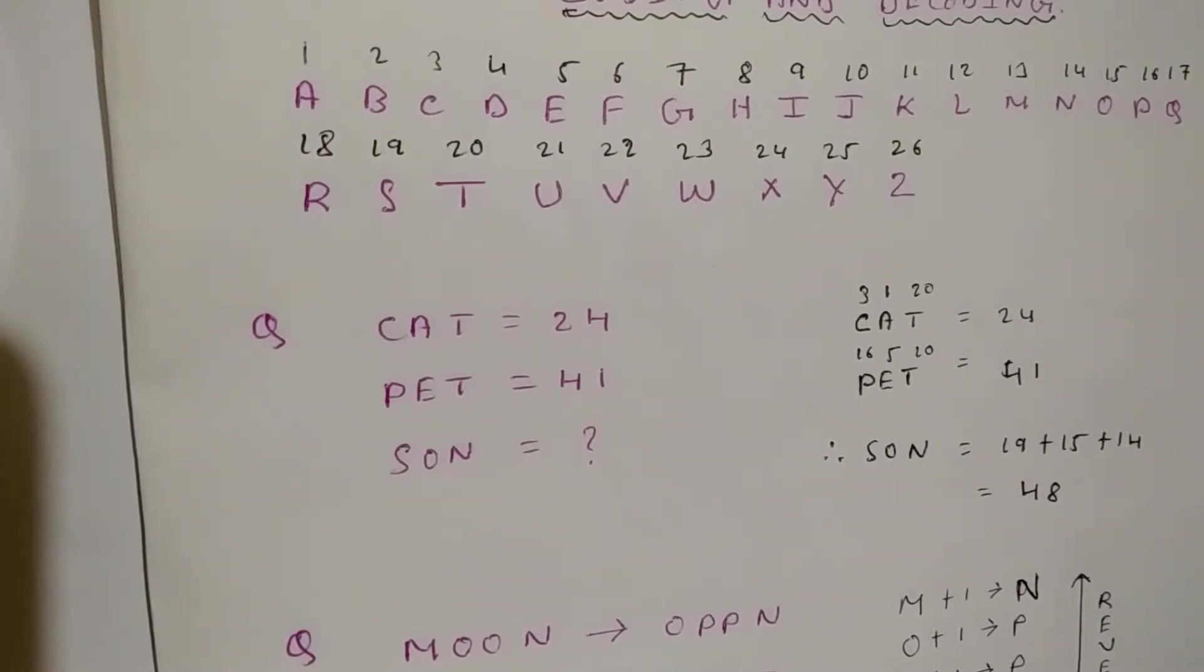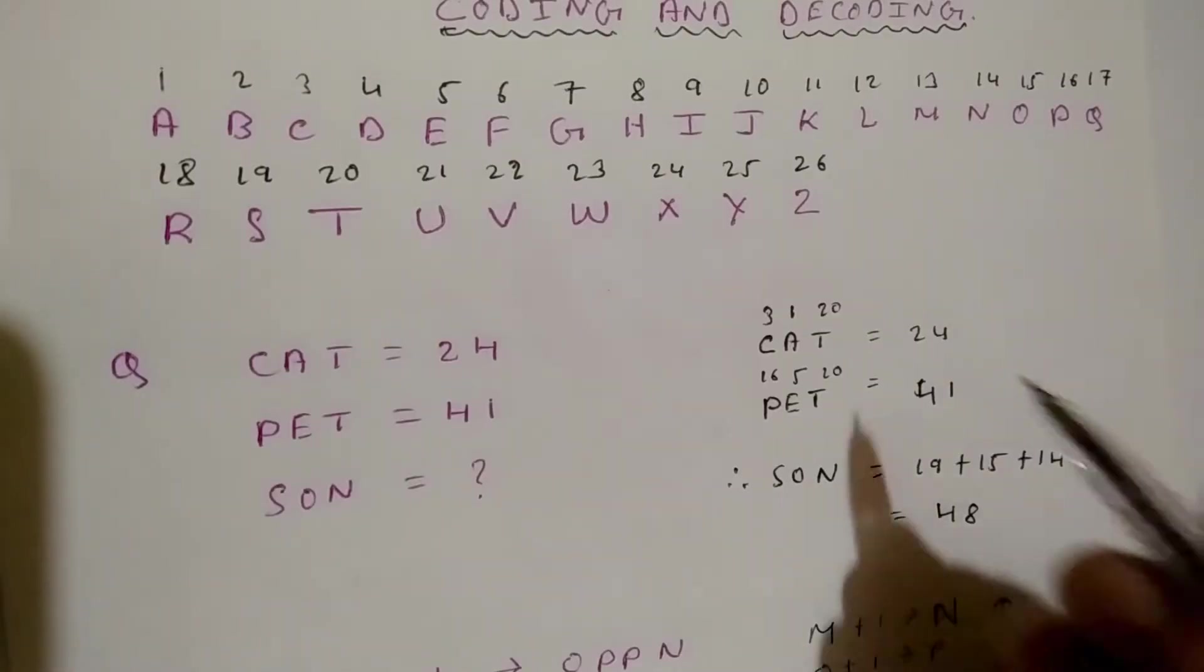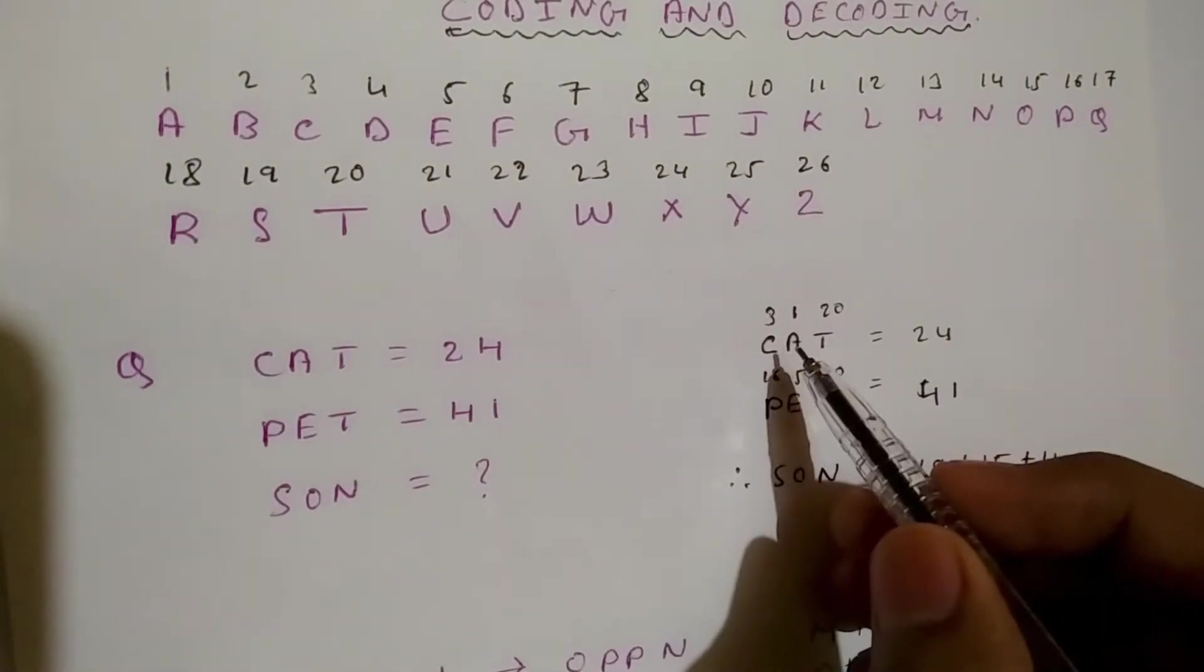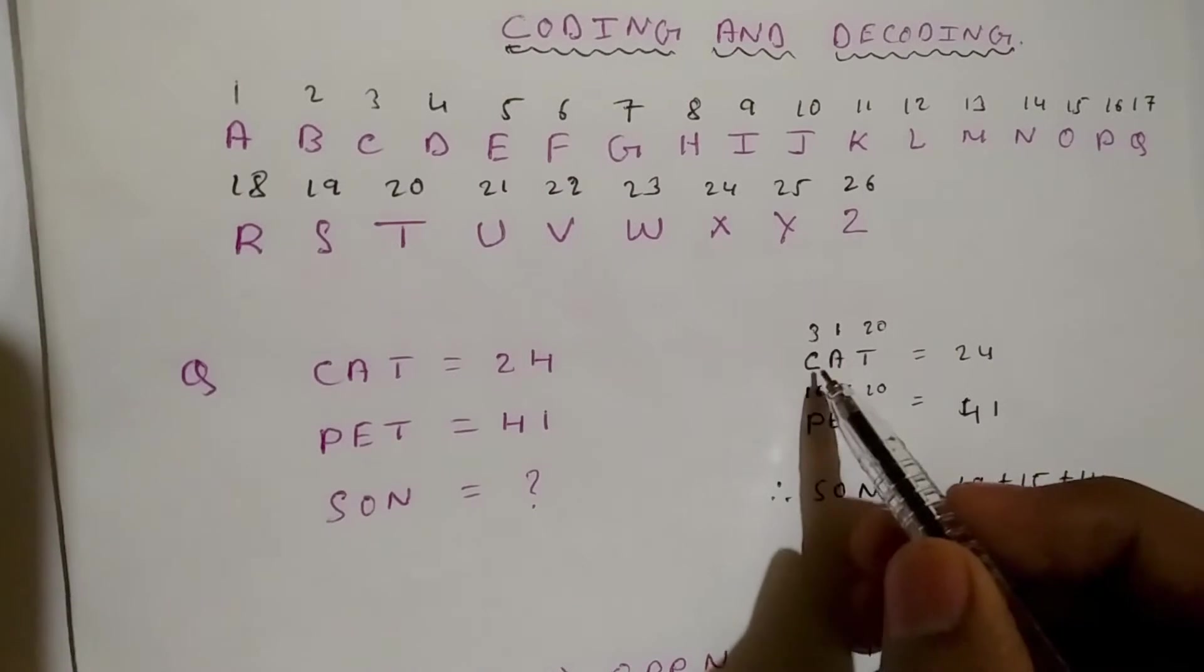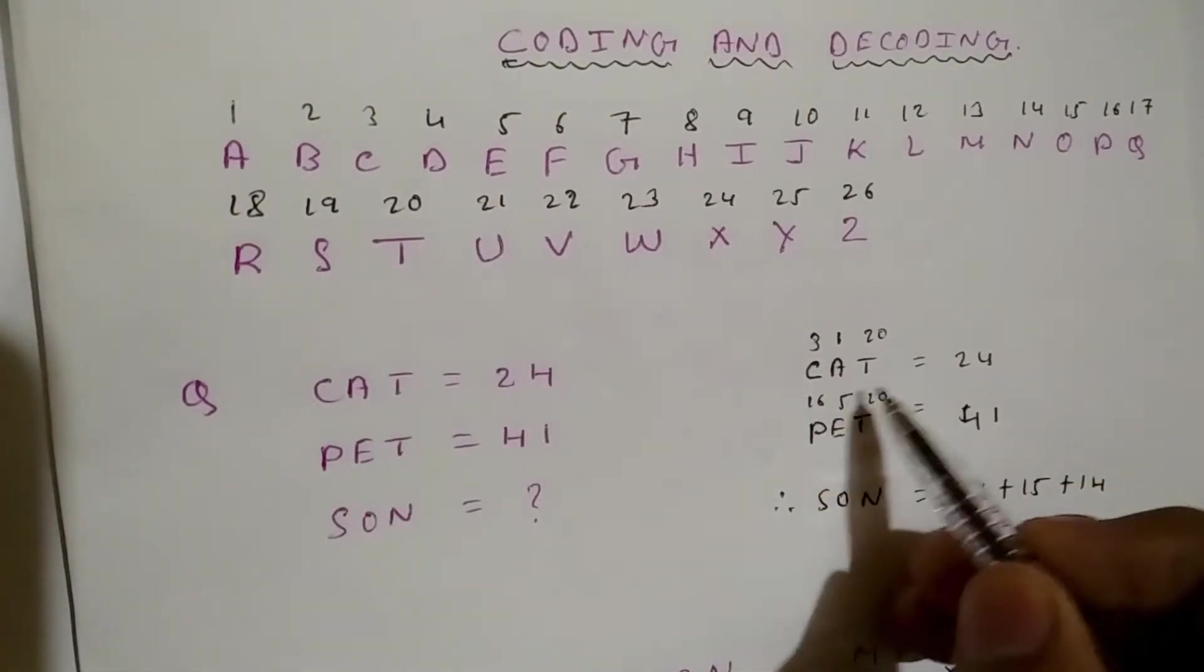I can solve here. Suppose CAT equals 24. I'll just put this value: C equals 3, A equals 1, and T equals 20. When I add these, I get 24.